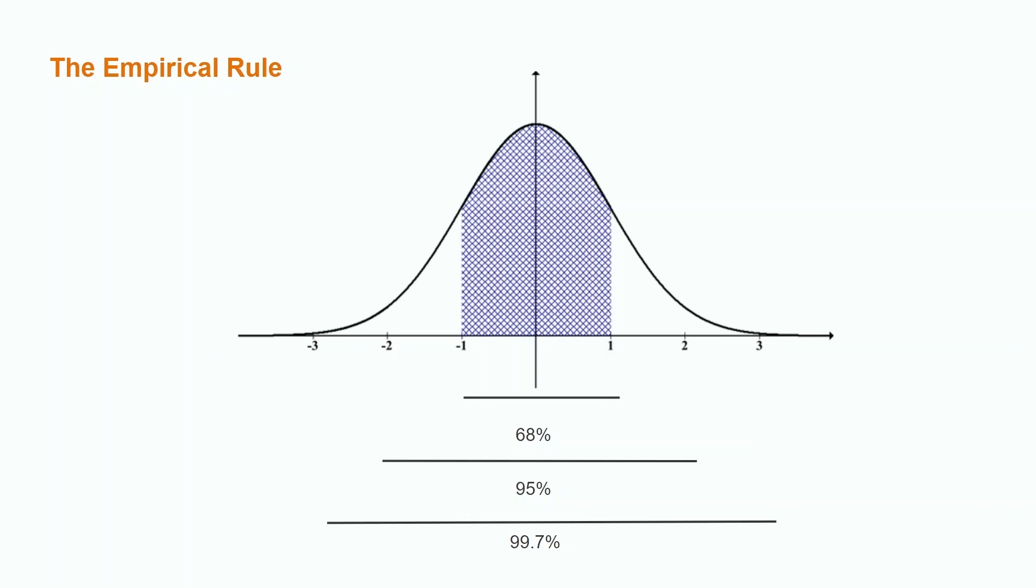The empirical rule shows us approximately what percentage of our data lies within 1, 2, and 3 standard deviations. Also known as the 68, 95, 99.7 rule.